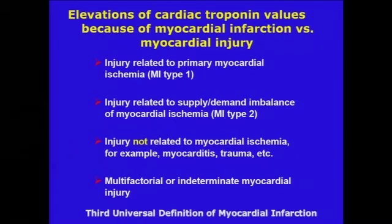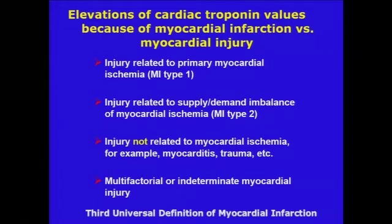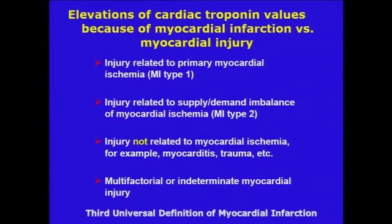To summarize: Type 1 injury is related to primary myocardial ischemia. Type 2 injury is related to supply-demand imbalances leading to myocardial ischemia. And then there can be injury not related to myocardial ischemia — the non-ischemic category. Finally, you can have more than one: somebody comes in with a STEMI and then goes into rapid atrial fibrillation. You can have elevated troponins from both the STEMI and the heart rate of 150, and there's no way to tell which one is raising the troponin.